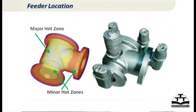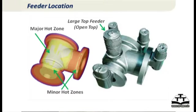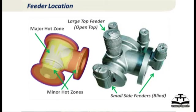An example shows two different types of feeders. The top feeder shown is a top open feeder, above the casting and open to the atmosphere. The other examples are side feeders and they are blind feeders. The top feeder is big; side feeders are small, because they correspond to hot spots in the casting. A larger hot spot requires a bigger feeder; smaller hot spots may require a smaller feeder or can sometimes be addressed by different methods.